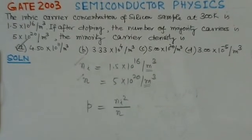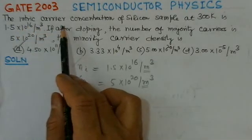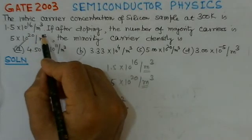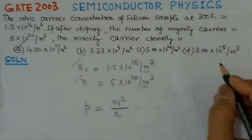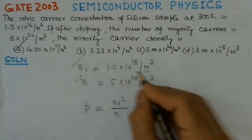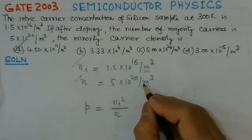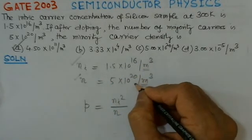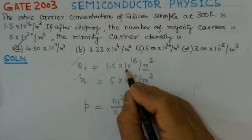The third problem is GATE 2003, also based on the mass action law. The intrinsic carrier concentration of a silicon sample at 300 K is 1.5 × 10^16 per meter cube. After doping, the number of majority carriers is 5 × 10^20 per meter cube. The minority carrier density is to be found. Note that the concentrations here are given in meter cube rather than centimeter cube, which is why the figures are much higher — by an order of 10^6.